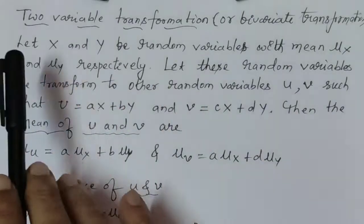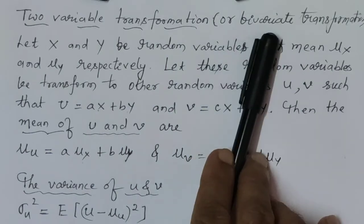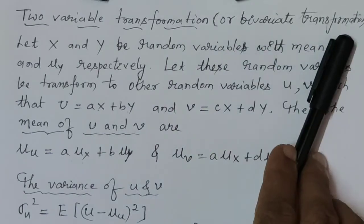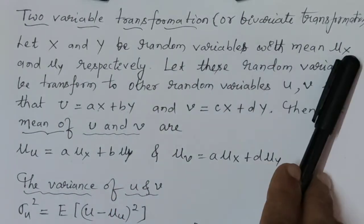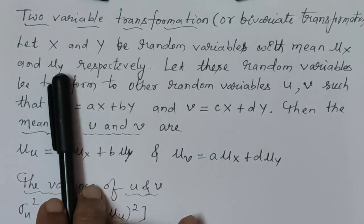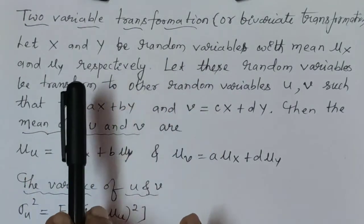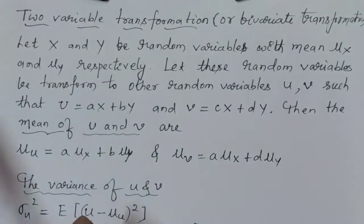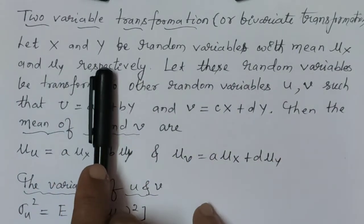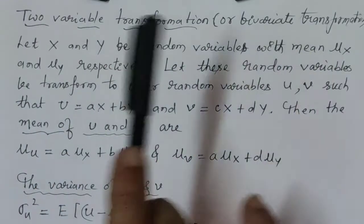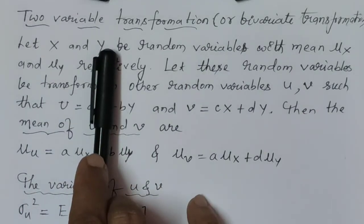Dear students, in this session we will discuss two variable transformation, also known as bivariate transformation. Let x and y be random variables with mean mu x and mu y — that is, a bivariate random variable with means mu x and mu y respectively.